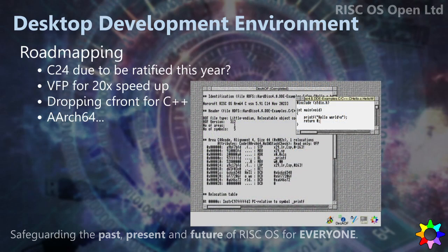Just to spitball the future for this stuff, we do think there are a few other things we'd like to do with the tools over time. One of them is about adding the latest C standard — there are quite a lot of interesting and useful features in the C language which have been introduced recently. We also want to improve VFP support — that's floating-point — and there are several applications that make heavy use of that. You could make a massive speed-up of C programs if the compiler supported the hardware for doing that. And there's a little thing like supporting AArch64 architectures that we would like to add as well.